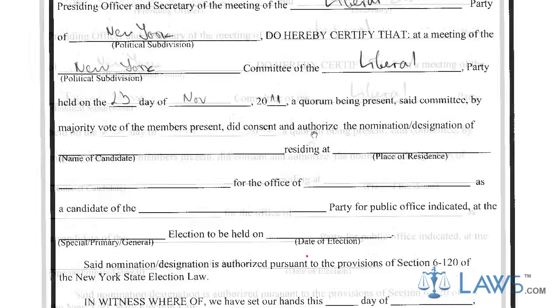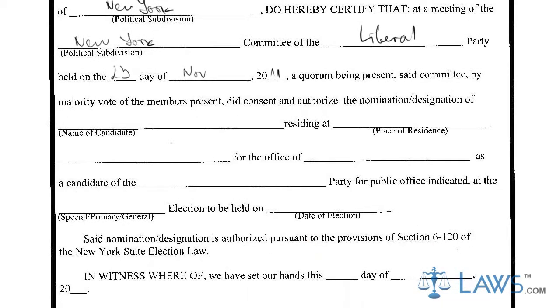Lines 7 and 8 require that you fill in the name and contact information of the candidate that is authorized to represent the party. Include his or her name, address, and the office for which the candidate is nominated.